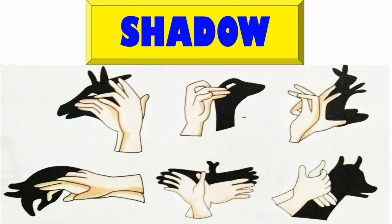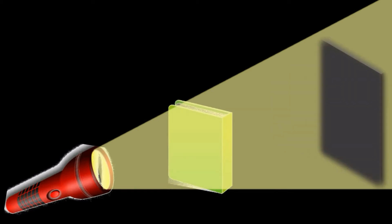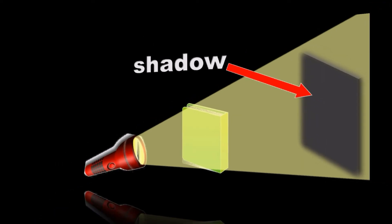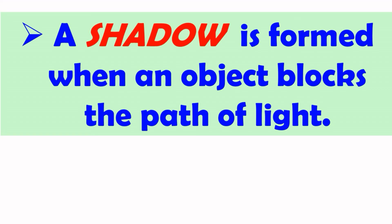Next topic is shadow. To understand the concept of shadow, let's do an activity first. In a dark room, focus light from the torch on a wall. Now, hold a book in the path of the light. You will see a dark area on the wall behind the book. This dark area behind the book is called its shadow. So, what is shadow and how it is formed?